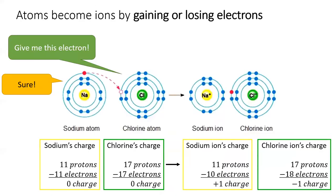Atoms become ions by gaining or losing electrons. Here's how the process looks on the atomic scale. Chlorine is a big bully and demands an electron from sodium. Sodium is such a weakling that it just hands over its electron. Now, sodium is missing an electron, so it has a positive charge. And chlorine has an extra electron, so it has a negative charge.